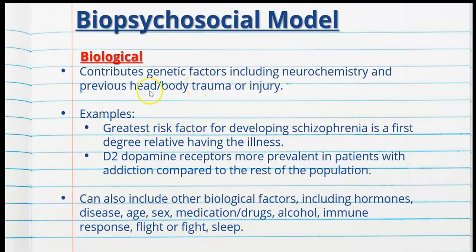For example, the greatest risk factor for developing schizophrenia is a first-degree relative having the illness, so we must look at family history as a potential biological factor. Another example: D2 dopamine receptors are more prevalent in patients with addiction compared to the rest of the population, so we need to look at receptors and dopamine production as a biological factor explaining addictive behaviour.